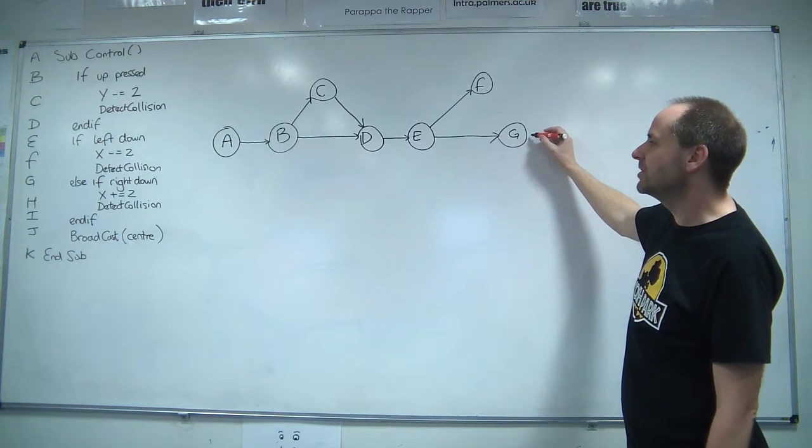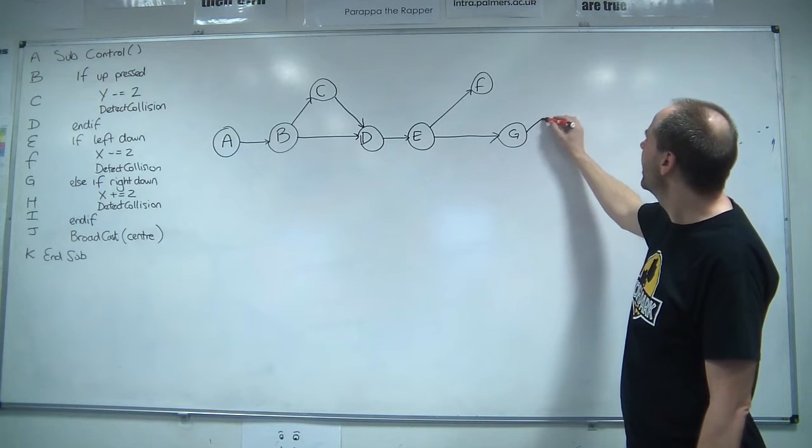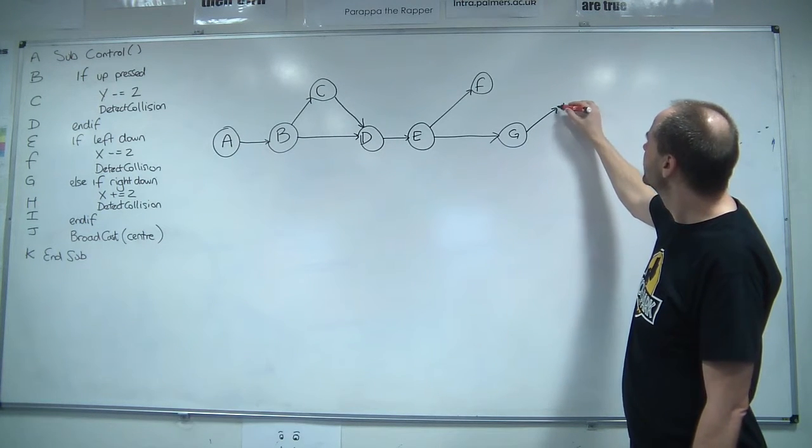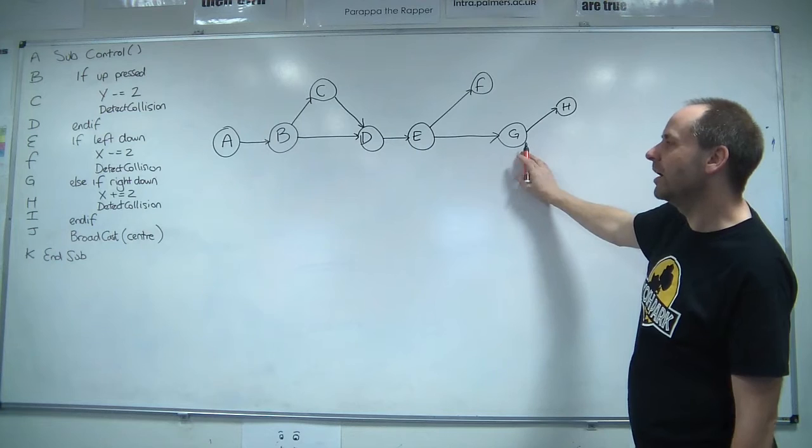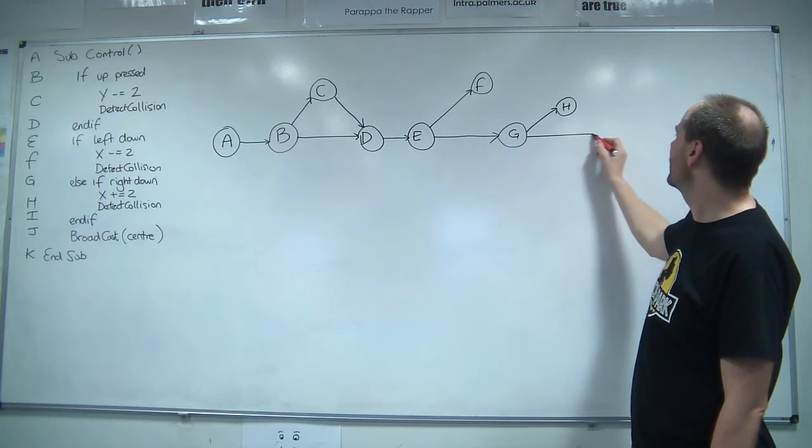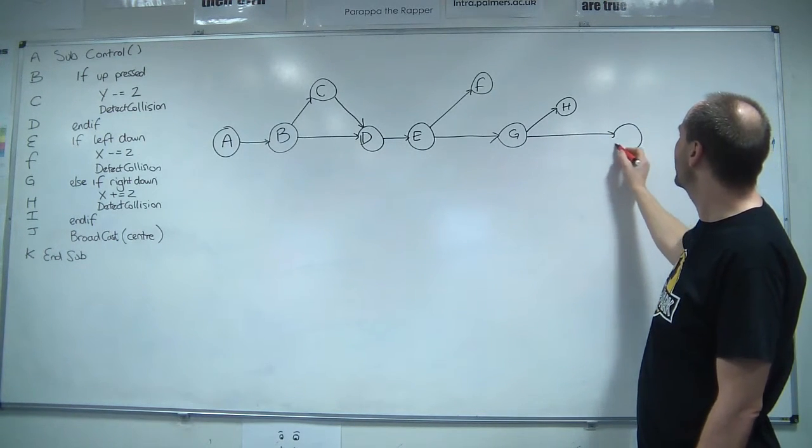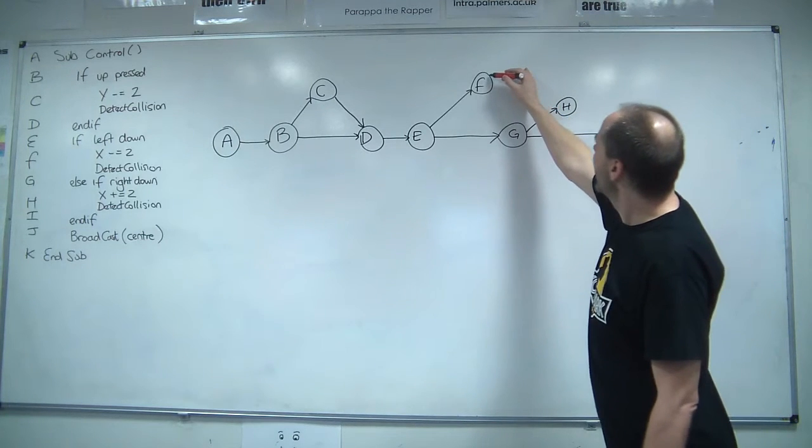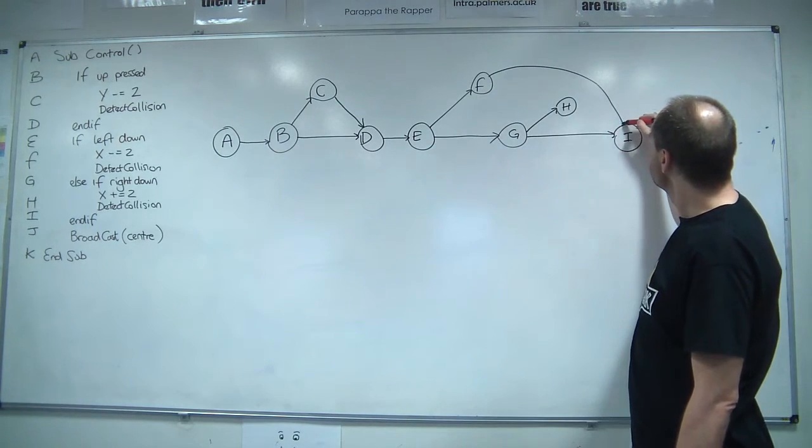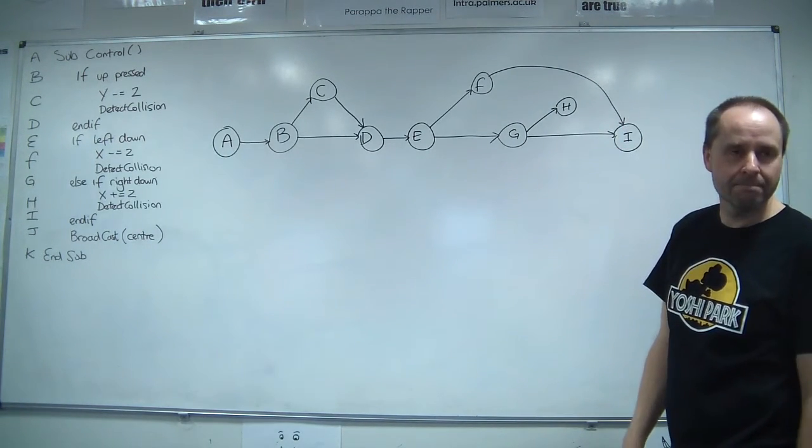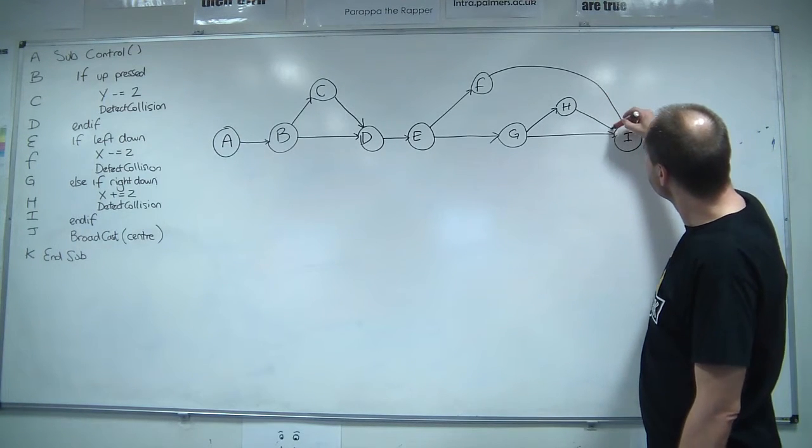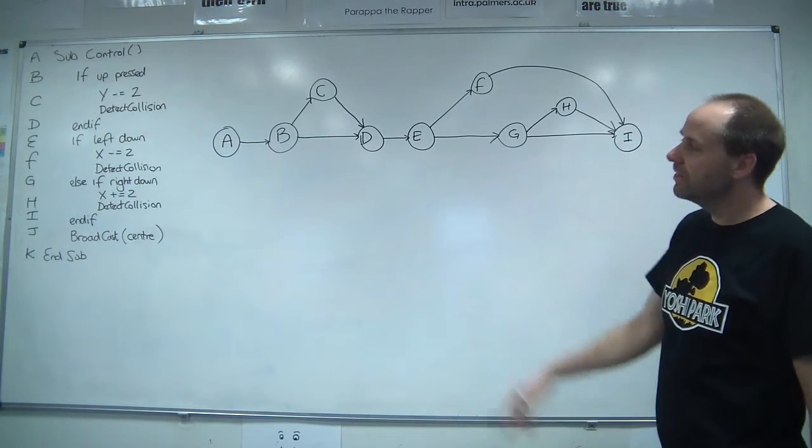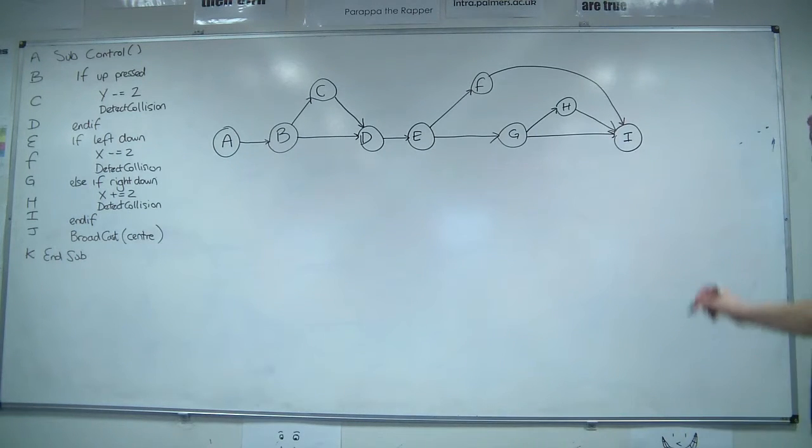So at G, I've got another decision, so I'm either going to do H or I am going to go to I. So I now know where I is on my diagram, so I can join that F up. So F ends up there, and H does as well. That's what I'm showing the graph for.